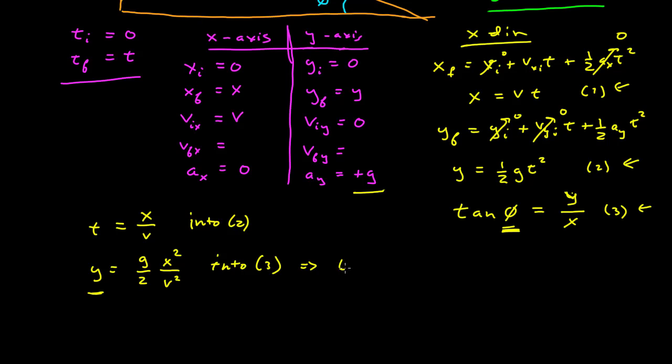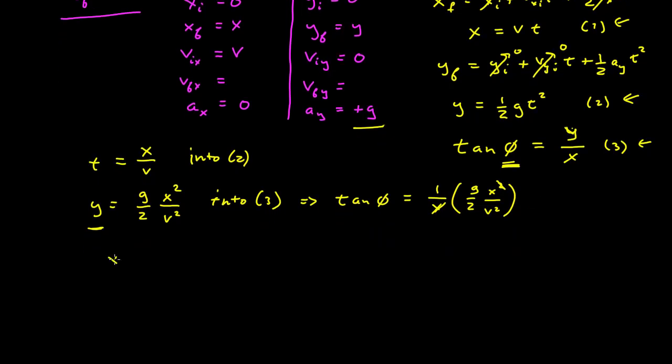And we get tangent of phi is equal to 1 over x times y, which is g over 2 x squared over v squared. We have a factor of x that cancels. We can solve for x using this expression. And so x is equal to 2 v squared over g tangent of phi. And so now that we know x, we can substitute into our first expression.